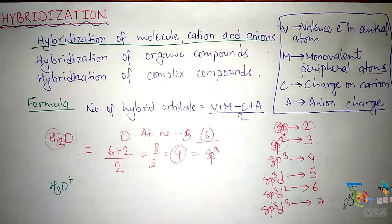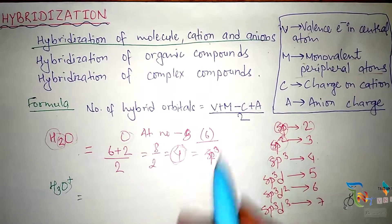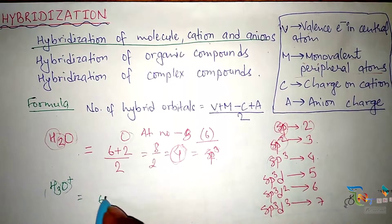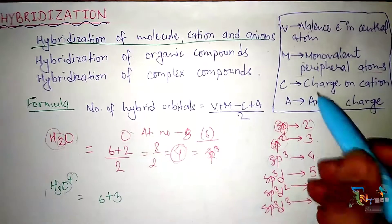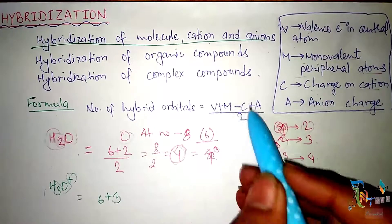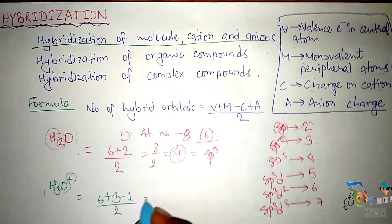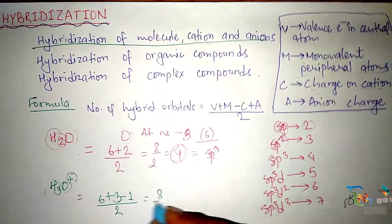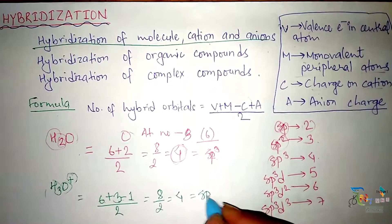Now let's discuss a cation example: S₃O⁺. Oxygen has 6 valence electrons. Peripheral atoms: 3 (monovalent). There is one cation, so we subtract 1. Formula: (6 + 3 - 1) / 2 = 8 / 2 = 4. So S₃O⁺ is sp3 hybridized.